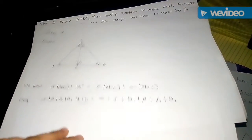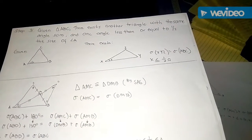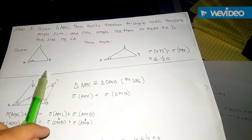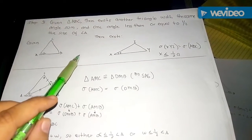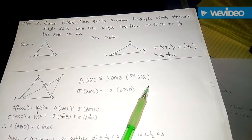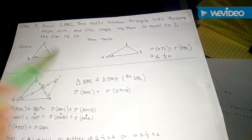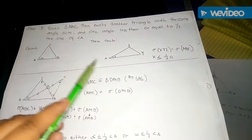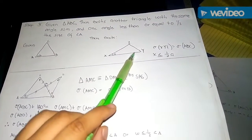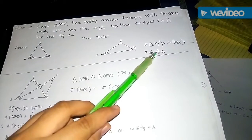Step 3 is a bit more complicated. It says: given a triangle ABC, we are able to construct a second triangle with the following properties — the second triangle has the same angle sum as the original triangle, and furthermore one of its angles will be less than or equal to half the size of a given angle of the first triangle. Visually, given triangle ABC with angle A, we can create triangle XYZ such that σ(XYZ) = σ(ABC) and angle X ≤ ½ · angle A.